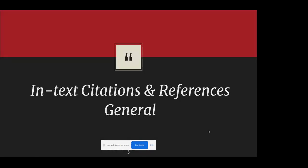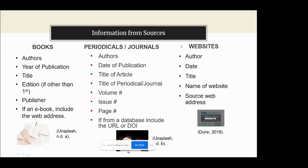Let's talk about how you can use in-text citations and references to help you avoid plagiarism. When you look at source information, you may get your resources from the internet, the library databases we talked about last week, books, periodicals, or websites. There is certain information you always want to look for from your sources, because that's going to be the information you'll use to put your references together and, from there, your in-text citations.